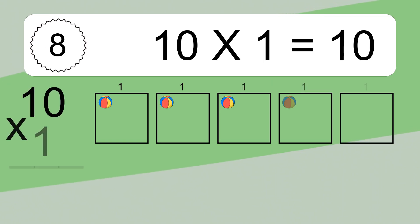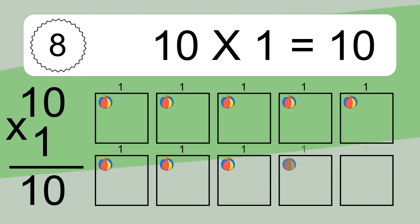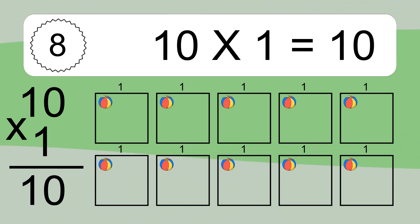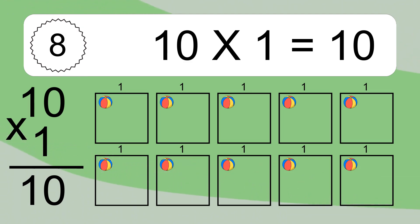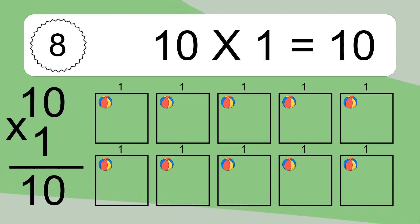10 times 1 equals 10. We have 10 boxes, and each box has 1 colorful ball inside. If you count all the balls in all the boxes together, you will have 10 times 1 balls. This equals 10 balls.